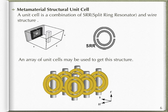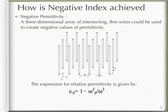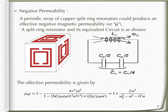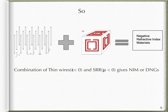Metamaterials are usually implemented in a recurring structure of these unit cells. To achieve negative permittivity, a three-dimensional array of intersecting thin wires could be used. The effective permittivity is negative when the frequency is below the plasma frequency ωp. To achieve negative permeability, an array of copper split ring resonators could be used. A split ring resonator is constructed by two concentric metallic rings, each having a gap placed 180 degrees apart. The gap between the rings acts as a capacitor while the rings themselves act as an inductor, resulting in an LC resonance circuit. A combination of thin wires and SRR together gives us negative refractive index materials.